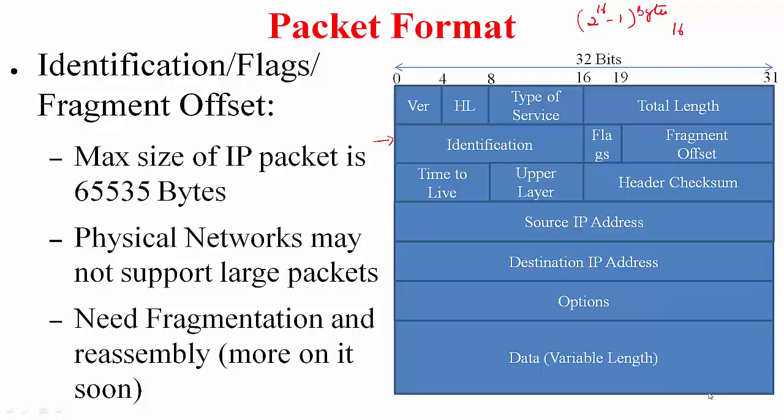You saw in case of ethernet that ethernet can only take 1500 bytes as the payload in the frame, whereas the maximum size of the IP packet can be much larger than this. Typically different physical networks will support different packet sizes. If you have a big packet and your underlying physical network does not support it you need to fragment that particular packet and reassemble it. We will cover more of this in the later portion of the video.